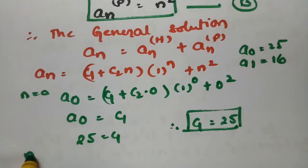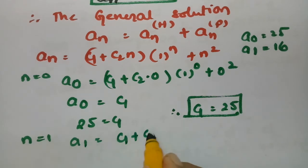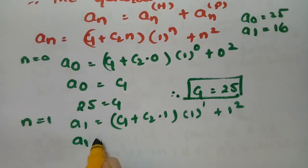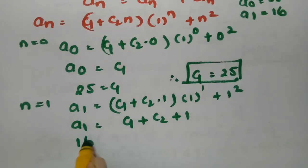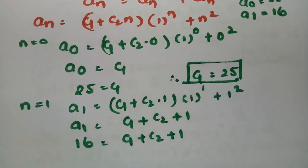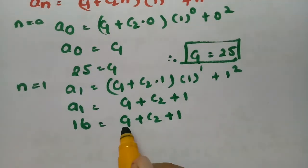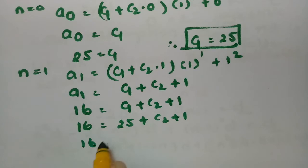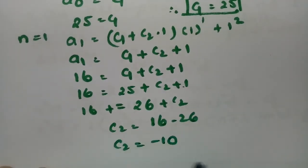Now substituting n = 1: A1 = C1 + C2·(1) + 1² = C1 + C2 + 1. Since A1 = 16 and C1 = 25: 16 = 25 + C2 + 1, so 16 = 26 + C2, giving C2 = 16 - 26 = -10.